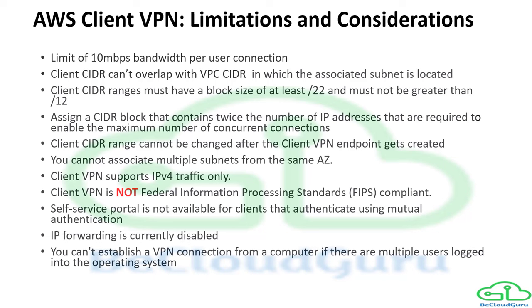The self-service portal is not available for clients using mutual authentication. IP forwarding is currently disabled and not allowed. You cannot establish a VPN connection from a computer if multiple users are logged into the same operating system simultaneously — a very important point to remember. That's it for AWS Client VPN endpoint. I hope you enjoyed this video with the proper structure. Thanks for watching!